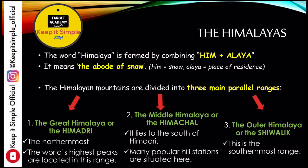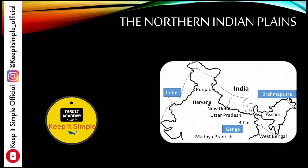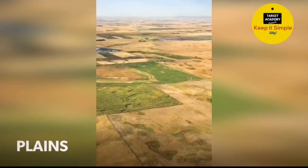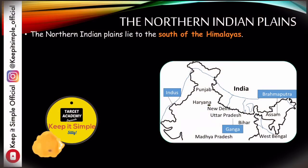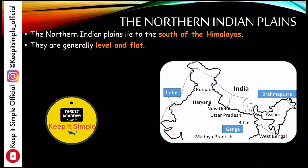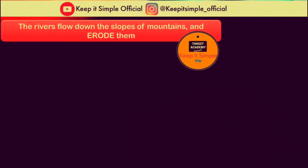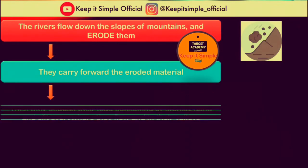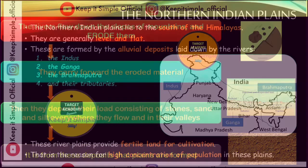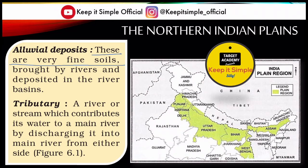The Northern Indian Plains lie to the south of the Himalayas and are mostly level and flat. These plains were formed by alluvial deposits brought by rivers. Rivers cause erosion — rocks and mountains are eroded, and the materials deposited are called alluvial deposits. These alluvial deposits are very fertile and good for cultivation, making crops very productive.